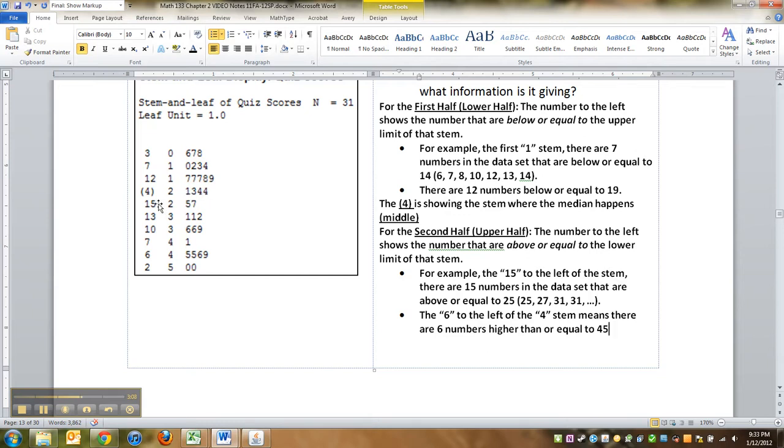And then after that point, you start counting the ones that are above you. So before the parentheses, you count the ones that are lower than you. After the parentheses, count the ones that are higher than you. So there's 15 higher than 25. There's 13 higher than or equal to 31. There's 10 that are higher than or equal to 36. There's seven that are higher than or equal to 41 and so on.